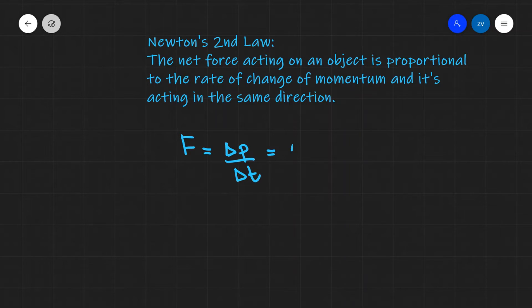Remember, linear momentum is equal to mass times velocity, so this is actually the change in mass times velocity divided by Δt.